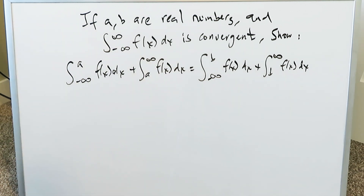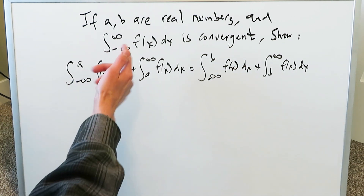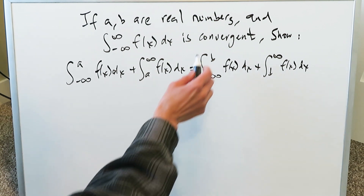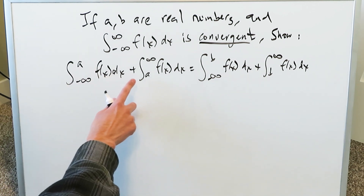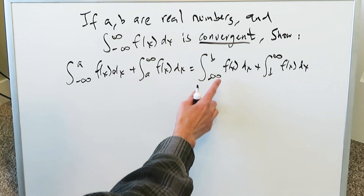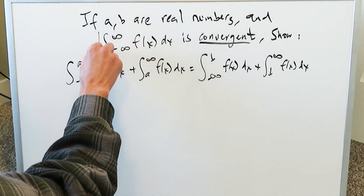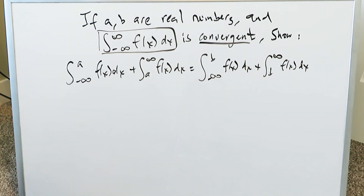We have in this statement: if a and b are real numbers, and the integral from minus infinity to positive infinity of f(x) dx is convergent, we have to show this is equal to the integral from minus infinity to a of f(x) dx plus a to infinity of f(x) dx, equals minus infinity to b of f(x) dx plus b to infinity of f(x) dx. This is a clear cut case of a Type 1 improper integral — there's no mention of an infinite discontinuity or a vertical asymptote.